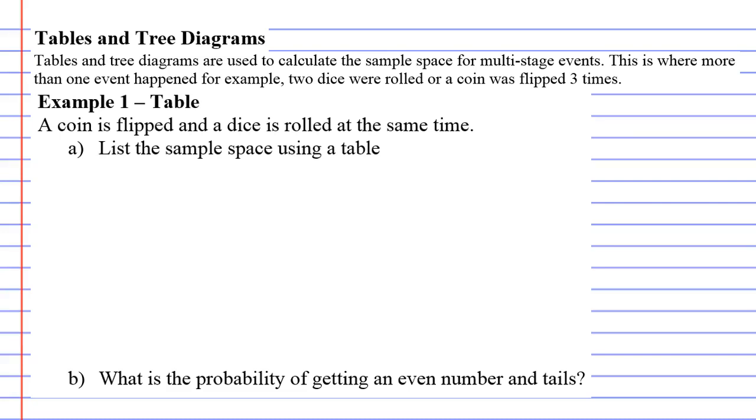All right, so what we're going to do is we're going to list each event separately, one in a row and one in a column. Let's do the dice along like so. 1, 2, 3, 4, 5, 6. These are the possible outcomes for a dice. And then we'll do the coin going downwards like so.